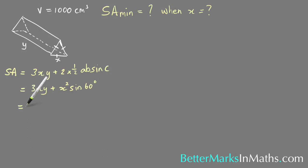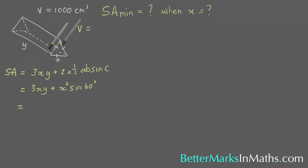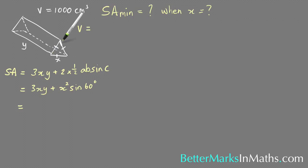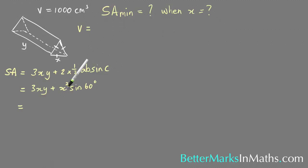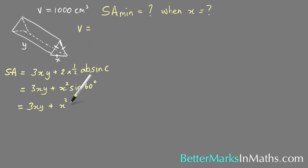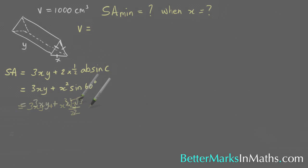You also need to figure out what y is equal to, and that comes from the volume. The volume equals the area of the base multiplied by the height. The cross-sectional area is again one-half ab sine C, which is one-half x squared sine 60. Simplifying gives 3xy plus x squared times root 3 over 2, since sine 60 equals root 3 over 2.